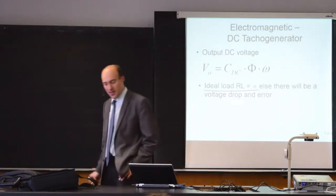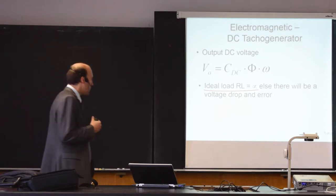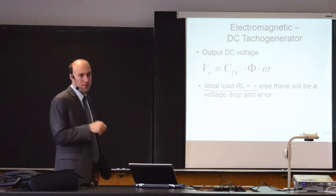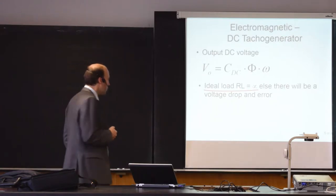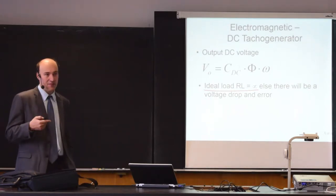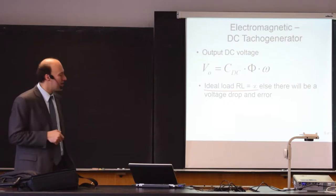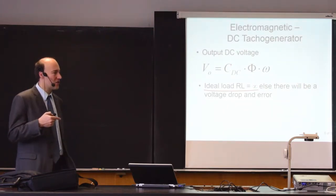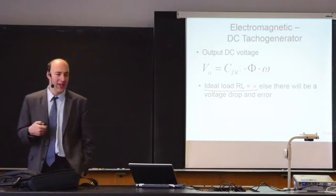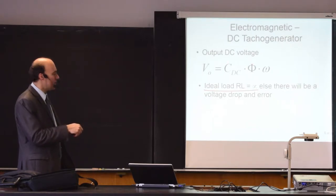The output voltage is a function of three things: it is a function of angular velocity — which is what we want to measure — it is a function of magnetic flux, where higher flux gives higher voltage, but this is given by the permanent magnet so it's a constant. The third value, C_DC, is also a constant describing the construction — it accounts for the size of the air gap and the materials used. So basically the output voltage is a linear function: a constant value times angular speed.